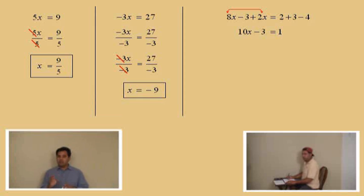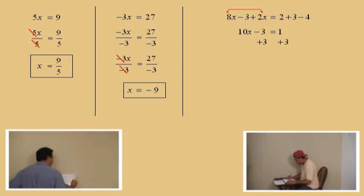Watch. We need to get rid of that subtract 3 by doing what to both sides, Charlie? Add 3. Add in 3. Very good, Charlie. Okay. And so, don't forget to bring down your bar and then your equal sign. Okay.